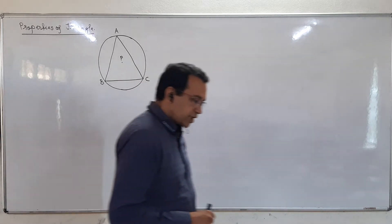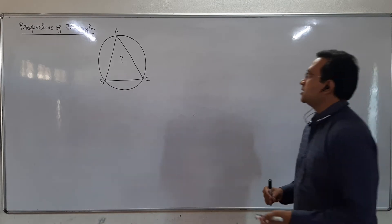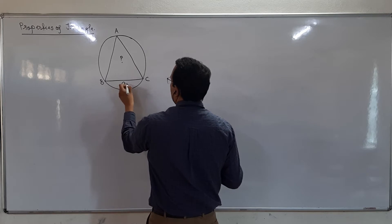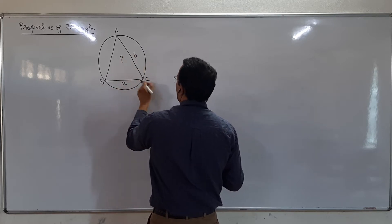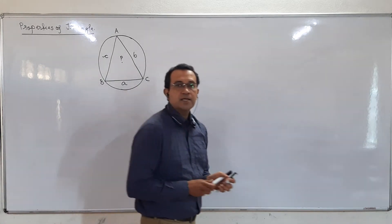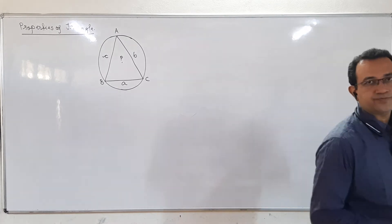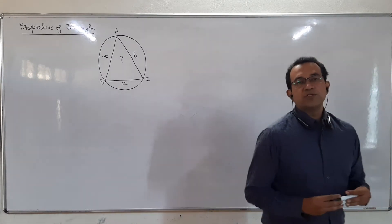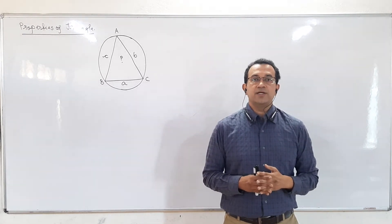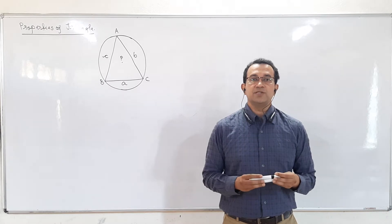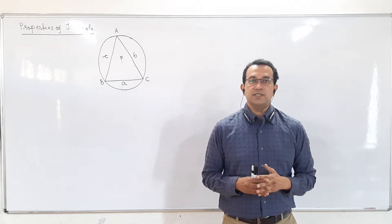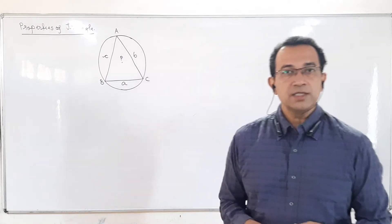Now some basic notations: the side opposite to vertex A is denoted as small a, side opposite to vertex B is small b, and the side opposite to vertex C is denoted by small c.